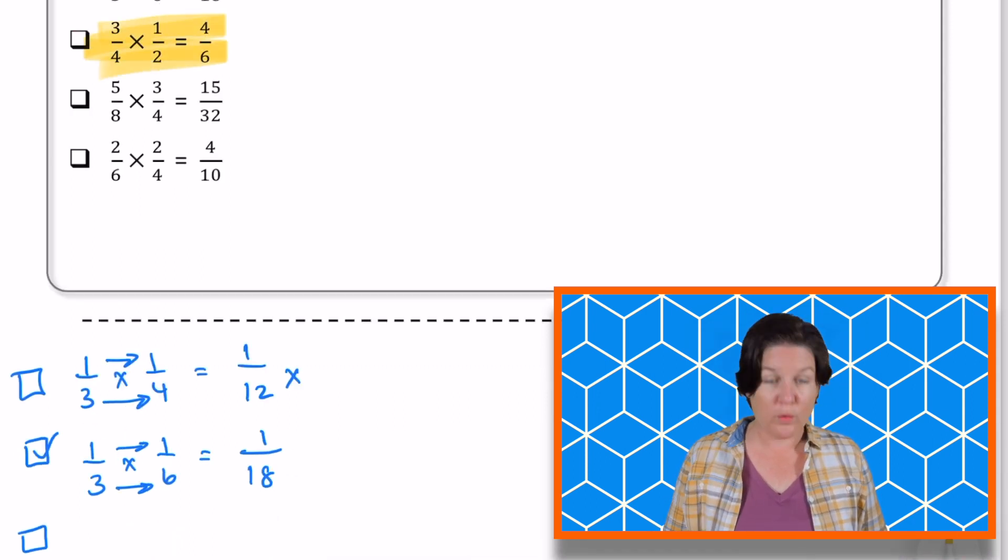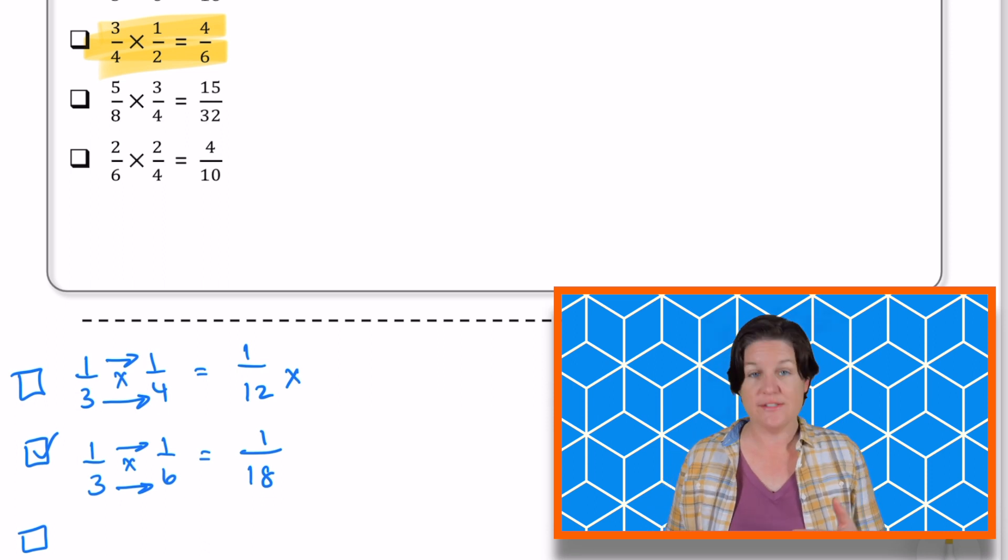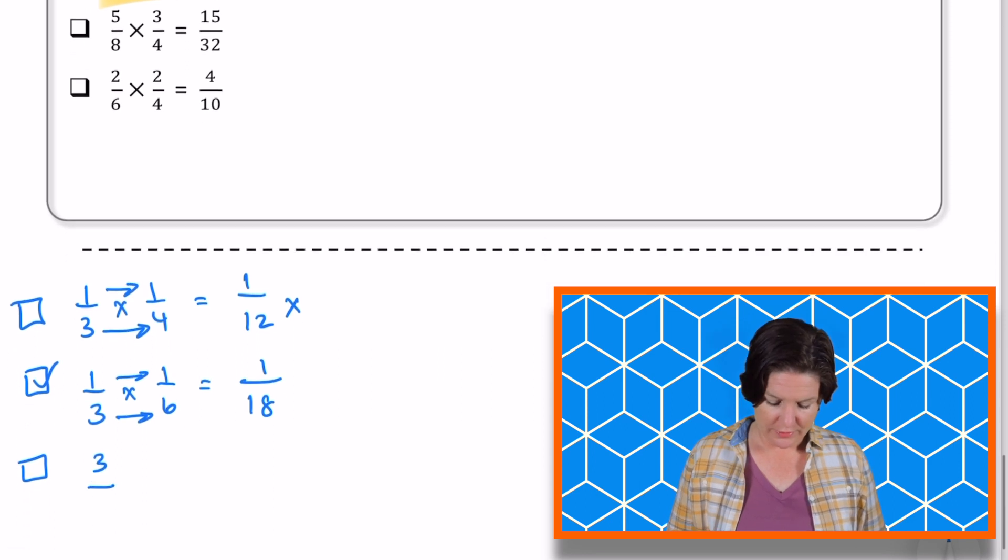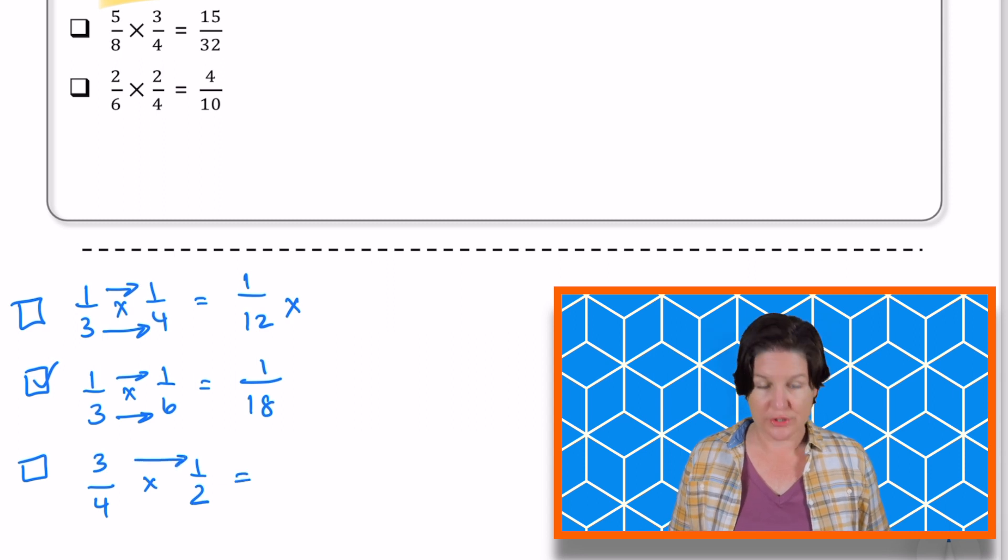Next up, we've got three fourths times one half, is that four sixths? Let me bring it on down. Three fourths times one half. Multiply the numerators, three times one is three.